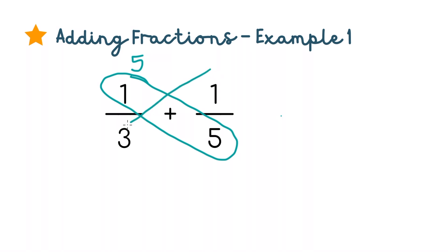Then cross multiply the other side, 1 times 3, which is 3. Then add them up, so 5 plus 3 is 8, and we'll put that in the numerator of our answer.